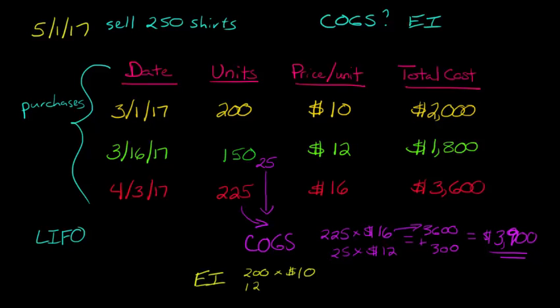So we've got 125 units there that didn't go to cost of goods sold, and the price was $12 a shirt. So this top portion is going to be $2,000, and then we add to that the bottom, 125 times $12, which is $1,500. And now we add these two together, and that gives us $3,500. And that's our ending inventory.